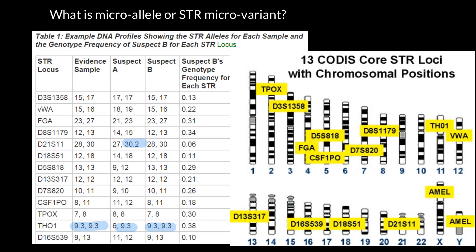You have to understand that, for example, Th01 — this locus — is present on chromosome number 11, and we have two such chromosomes. That's why we can get one number of repeats of the core sequence from the chromosome inherited from the mother's side, but a different number of repeats from the chromosome inherited from the other parent. As you see, this person inherited 6 repeats on one chromosome from one parent and 9.3 from the second parent.